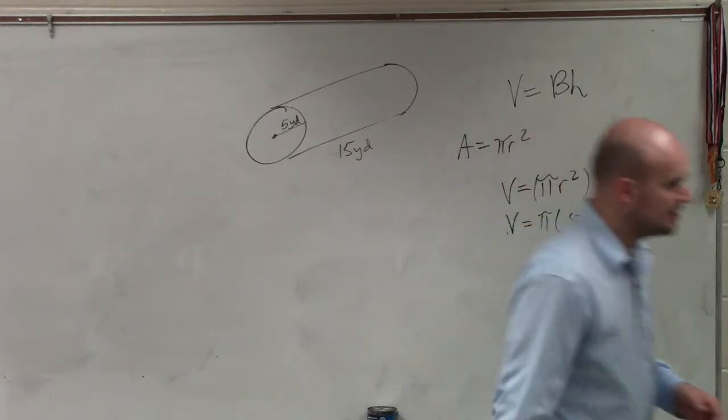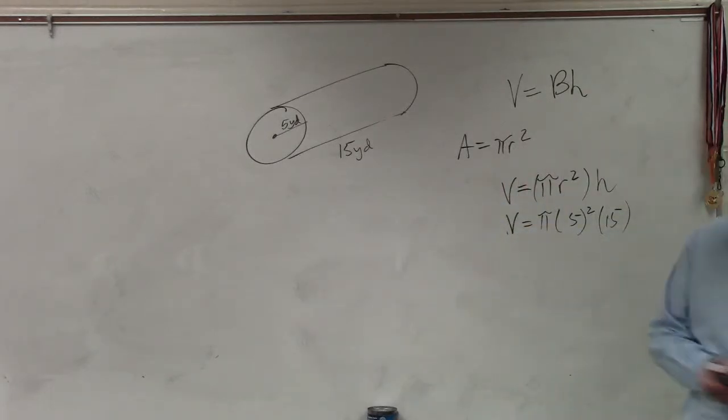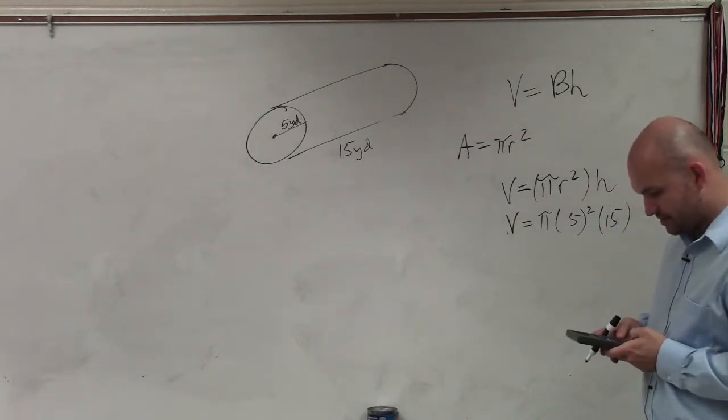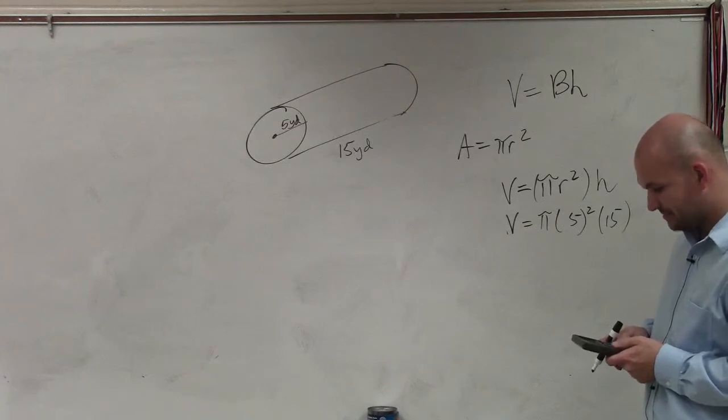Now we simply just need to take our calculator, and I can simply just do 5 squared, which is 25, times 15, times pi.